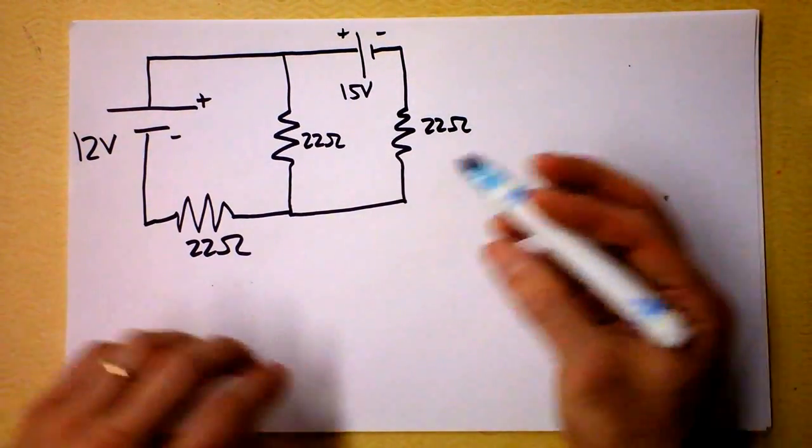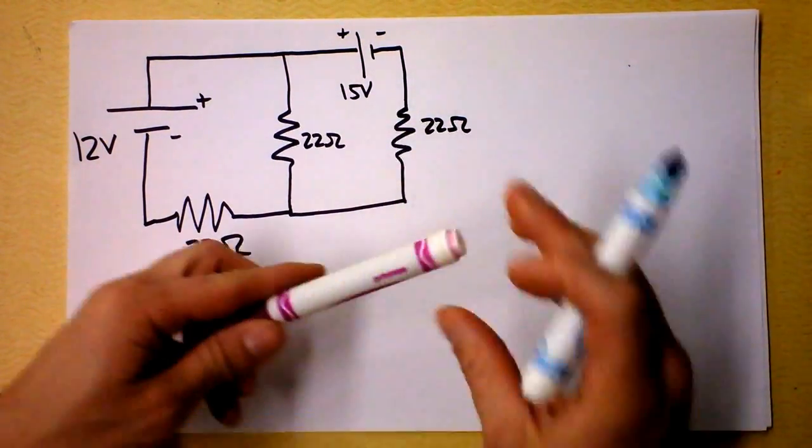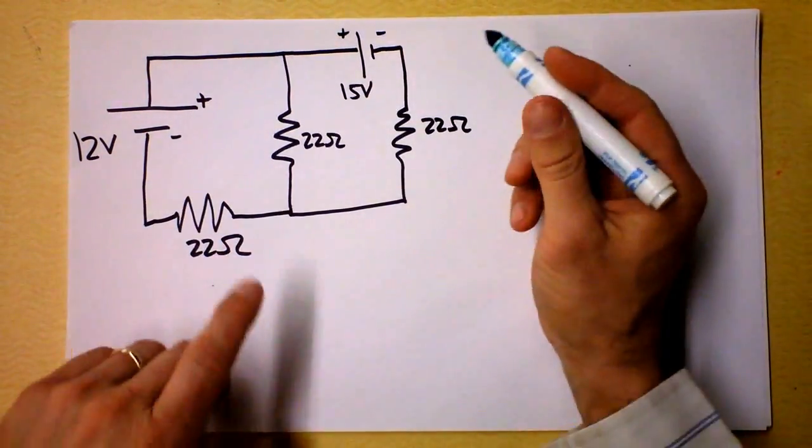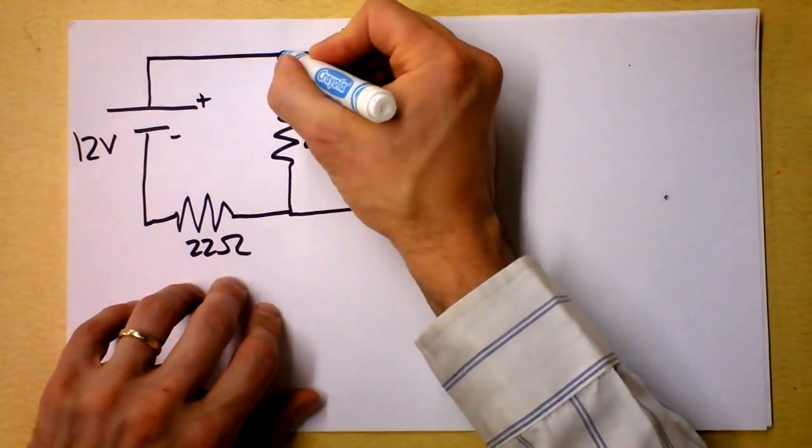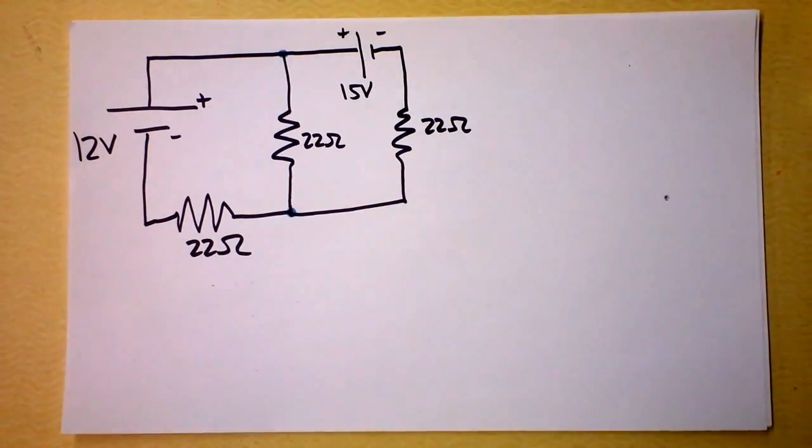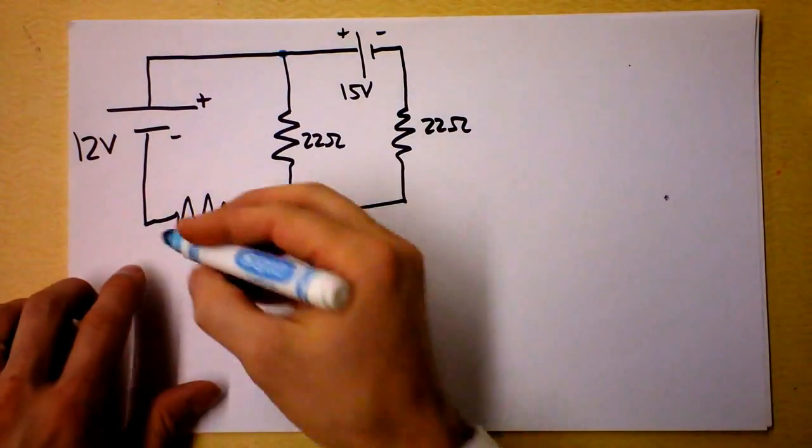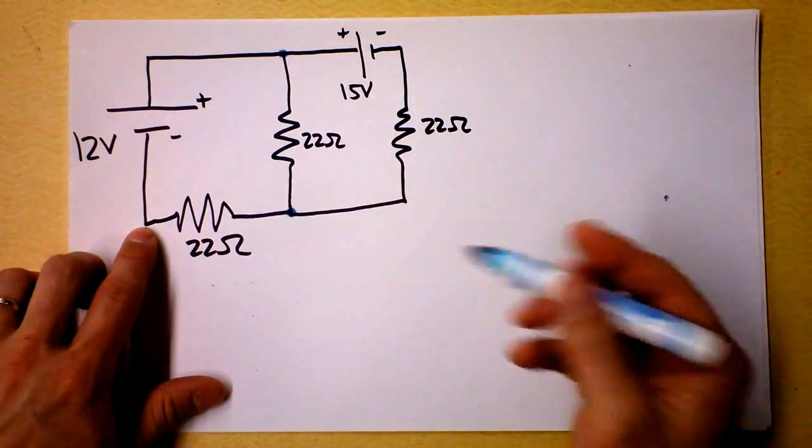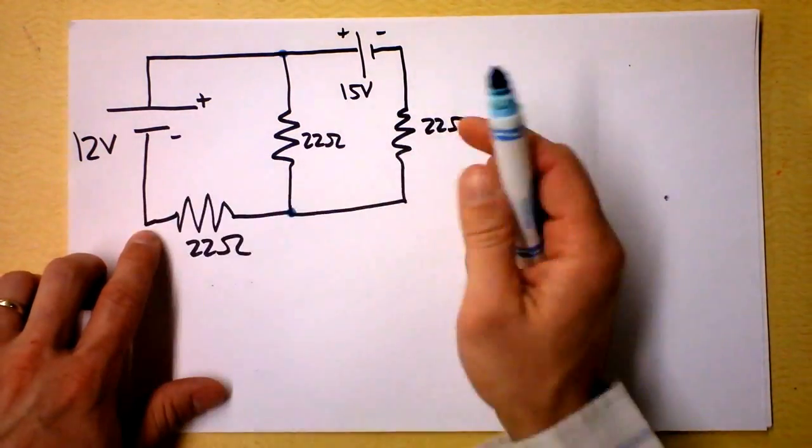So first I'll start with the junction rule. It's not as much fun, so I'm saving primrose for the loop rule. But the junction rule involves this junction right here and this junction right there because those are the places that three or more wires meet. Obviously a single junction where two wires meet is asinine because you've got current going in and current going out.